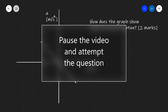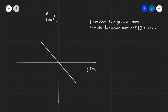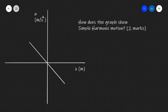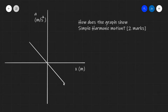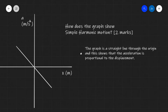This would be a perfect opportunity for you to pause this video and attempt the question. Different features of this graph showcase different aspects of simple harmonic motion. For instance, the fact that the graph is a straight line through the origin showcases that the acceleration is directly proportional to the displacement. Remember, the fact that acceleration is proportional to displacement is one of the defining characteristics of simple harmonic motion.